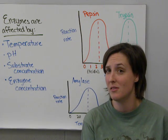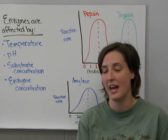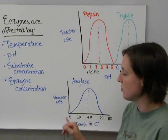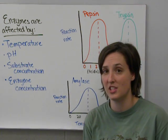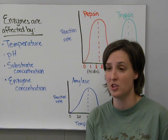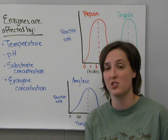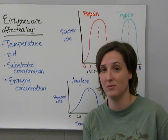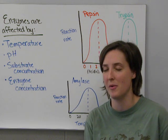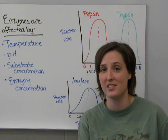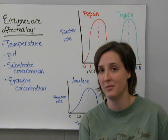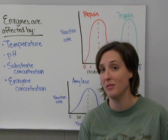For most enzymes, they're going to have a range where they can function best. If you go above or too far below the temperature or the pH where those enzymes function best, those enzymes are going to start to unravel — and that's called denaturing. When an enzyme is not in its optimum range, it can't function as well, or it may not be able to function at all.